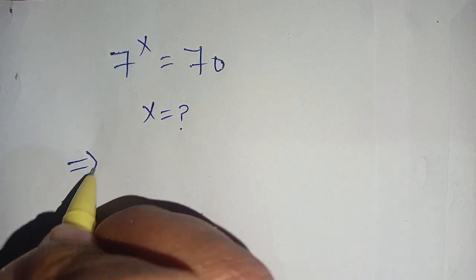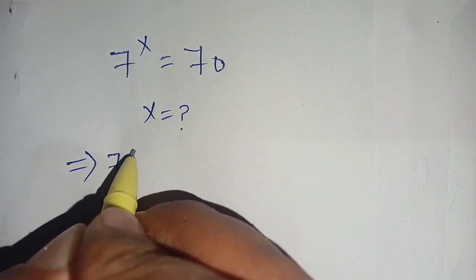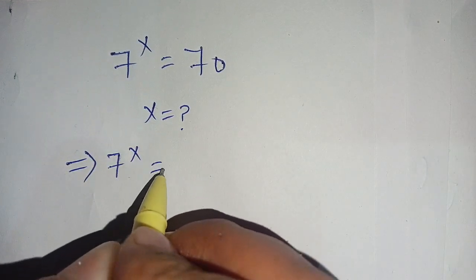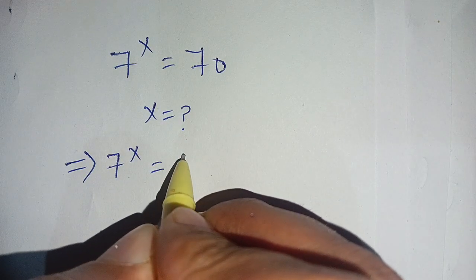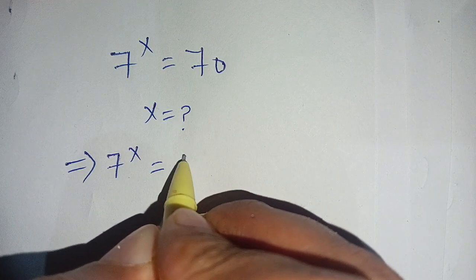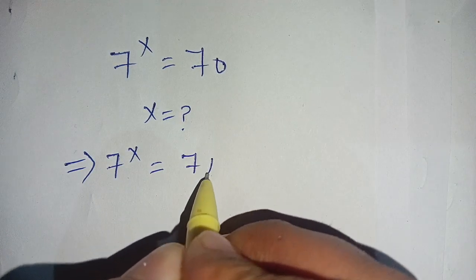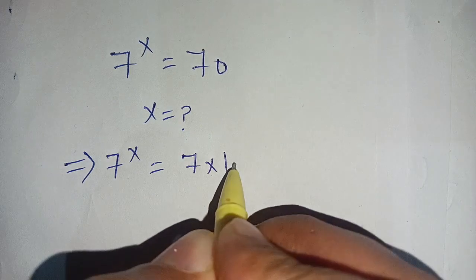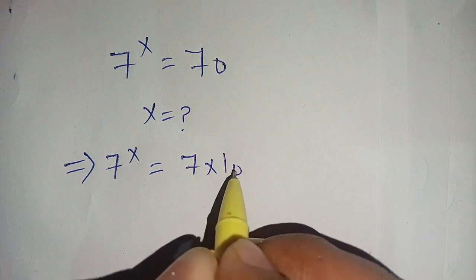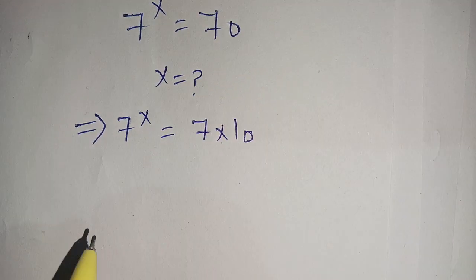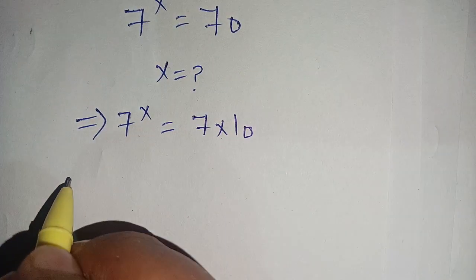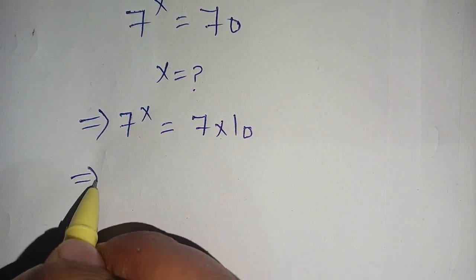We can write it as 7 power x is equal to 70, which can be broken down in terms of 10. We can write 70 as 7 times 10.